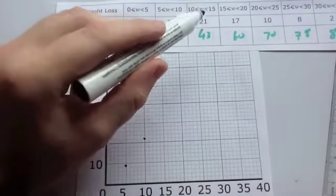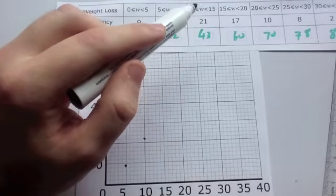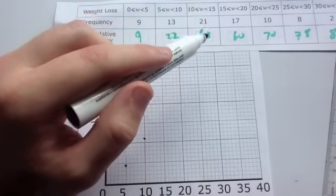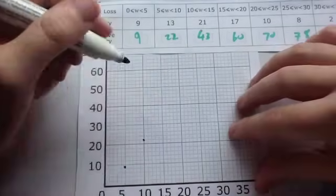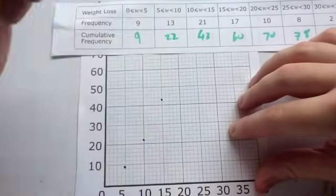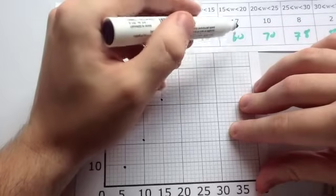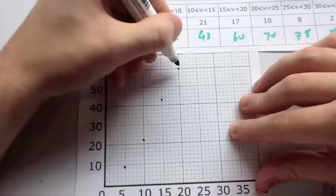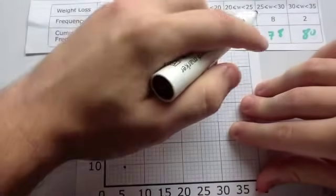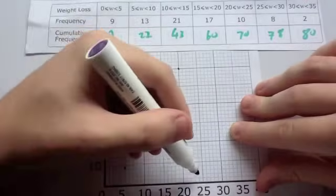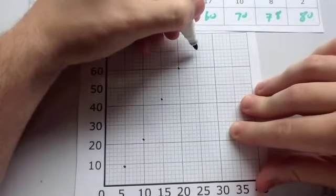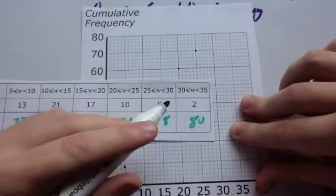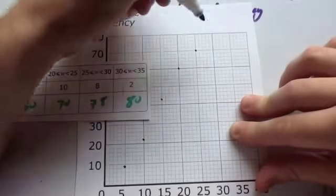Next one, we've got our cumulative frequency of 43, and that was for the category from 10 to 15. So the end of the category, 15 and 43. So you plot each point at the end of each category. So 15 across, 43 up. Next one, 15 to 20 and the cumulative frequency is 60. So 20 across, 60 up. 20 to 25, the cumulative frequency is 70. So 25 across and 70 up.